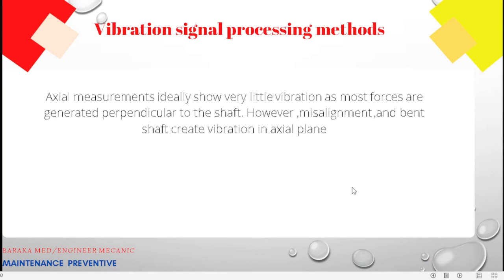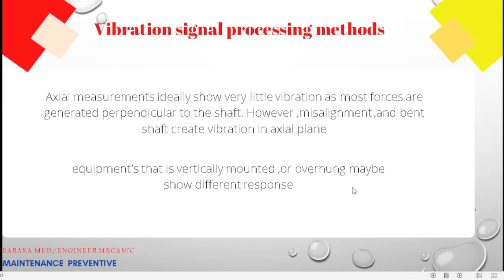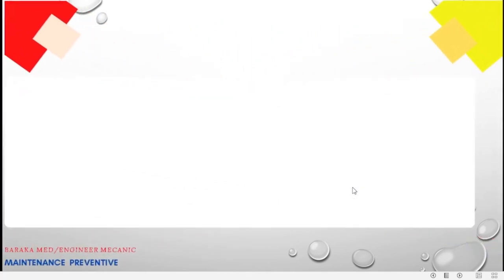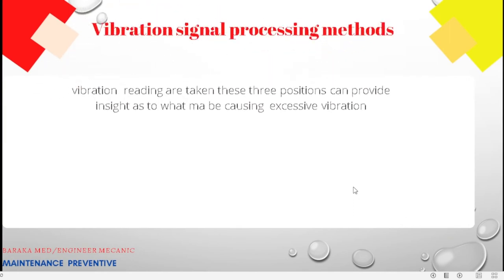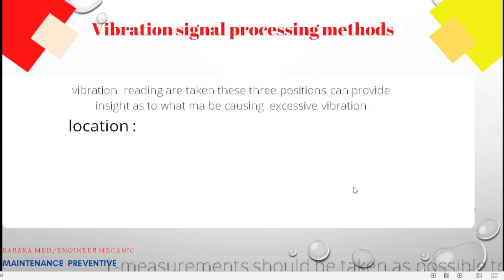Regarding axial measurements: axial shows very little vibration as most force is generated perpendicular to the shaft. However, misalignment and a bent shaft create vibration in the axial plane. Equipment mounted overhead may show a different response. In summary: horizontal is good for detecting imbalance, and axial vibration positions can provide clues as to what may be causing excessive vibration.